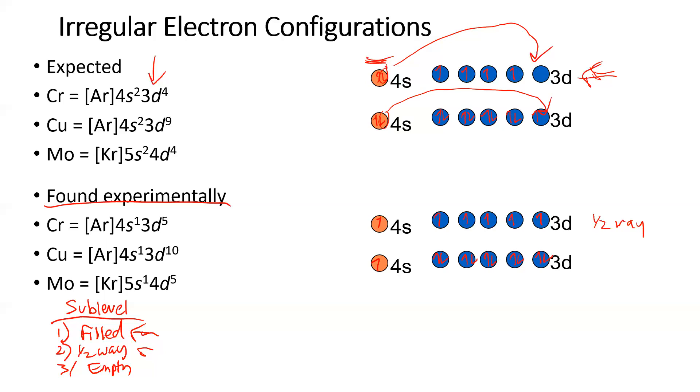And now when you look at it, the d is stoked. It's filled. And the 4s sublevel is pretty happy, because it's halfway filled. So it's a good compromise.